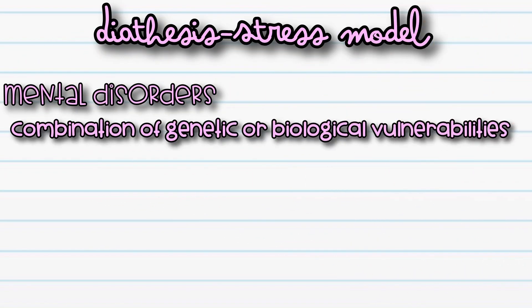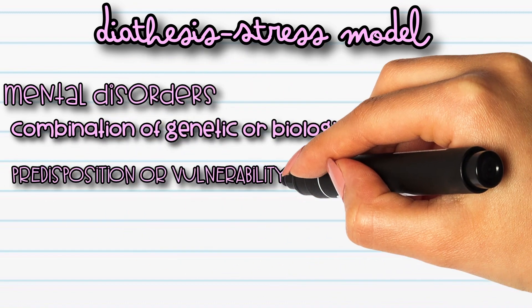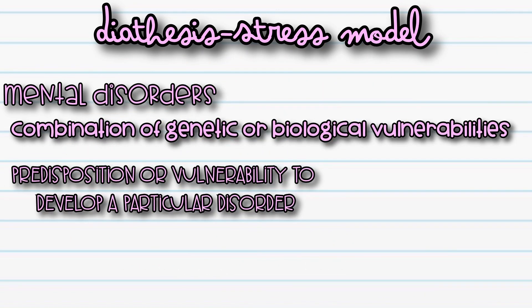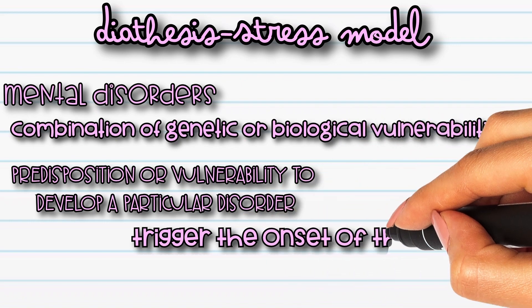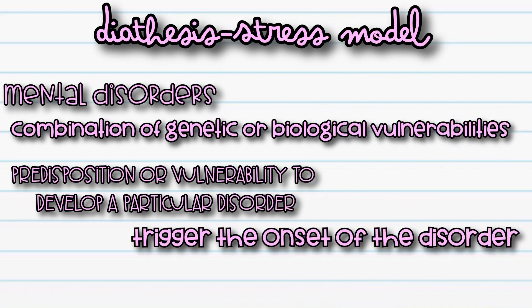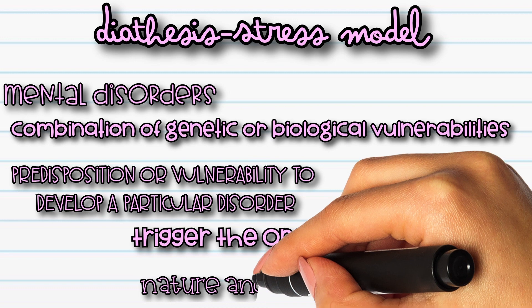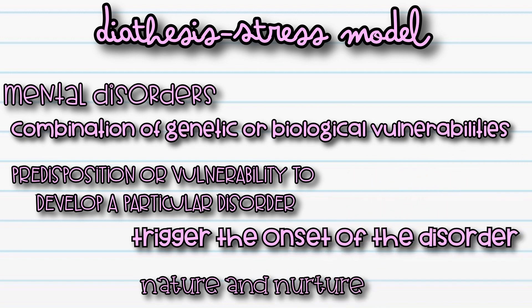The diathesis-stress model is a psychological theory that suggests that mental disorders result from a combination of genetic or biological vulnerabilities — diathesis — and environmental or life stressors. According to this model, individuals may have a predisposition or vulnerability to develop a particular disorder, but it is the presence of stressors or life events that trigger the onset of the disorder. The diathesis-stress model emphasises the interaction between nature and nurture in the development of mental health conditions.